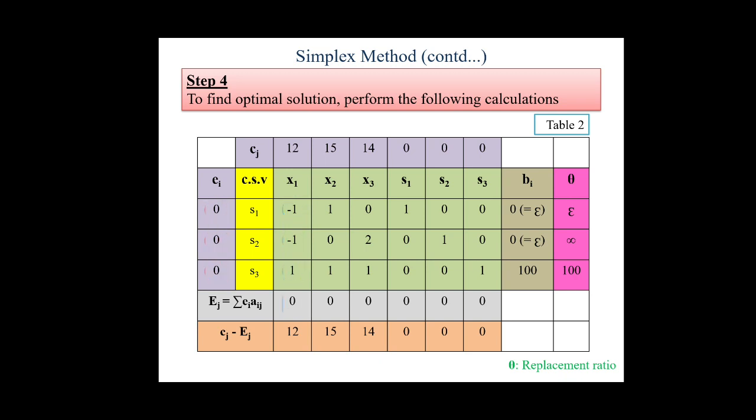0 into minus 1 plus 0 into minus 1 plus 0 into 1. So the eij column value, first column value is 0. Similarly, next column value 0 into 1 plus 0 into 0 plus 0 into 1. This also gives us value 0. So likewise, in all columns we will calculate the ej values. After this, we have to calculate cj minus ej. That is, the cj column 12 minus 0 is giving 12. So in this way we will calculate all the remaining values.